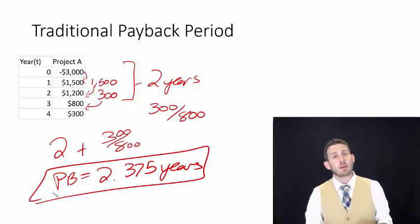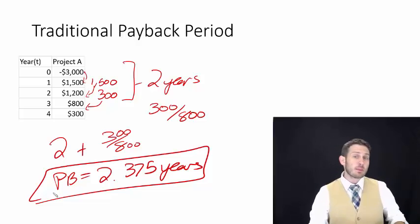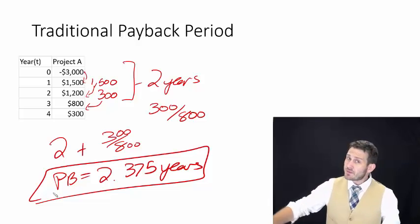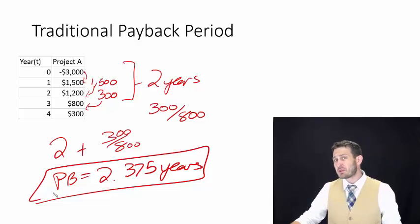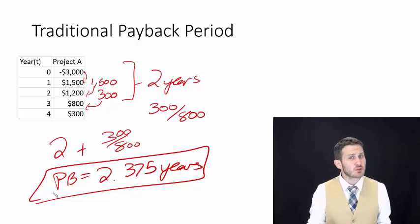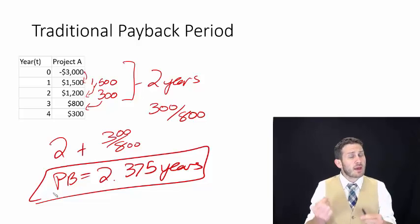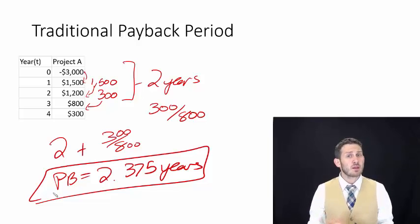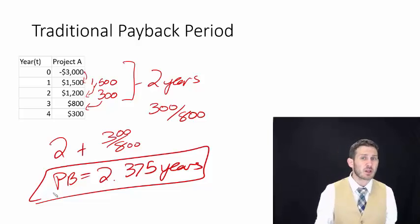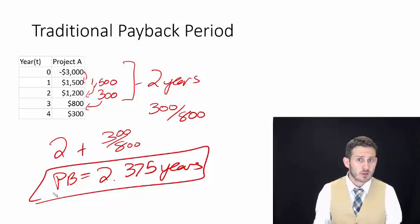The major problem with the traditional payback period is: what if it takes us 10, 12, or 15 years before we recoup that initial investment? We haven't incorporated the time value of money. We haven't incorporated the opportunity cost of what else we could have been investing in.